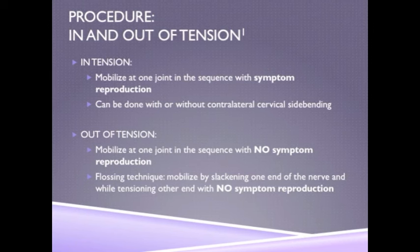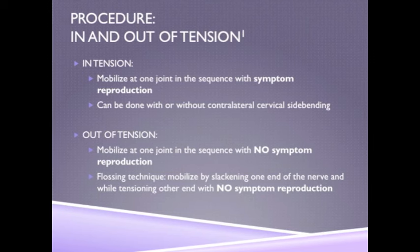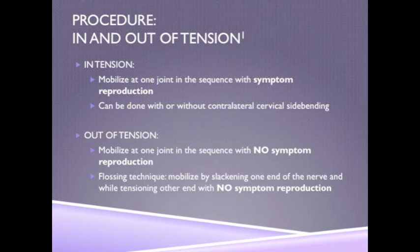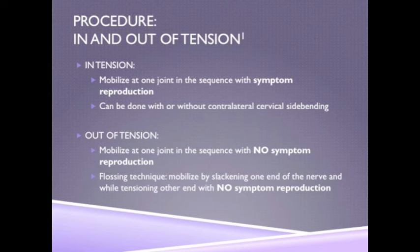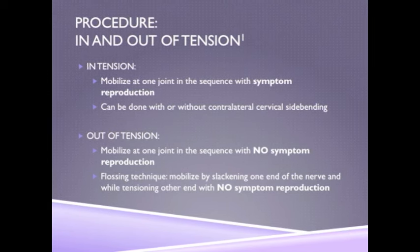An out-of-tension mobilization is performed at one joint in the sequence with no symptom reproduction. You can also do a flossing technique, in which you mobilize by slackening one end of the nerve and tensioning the other with no symptom reproduction.